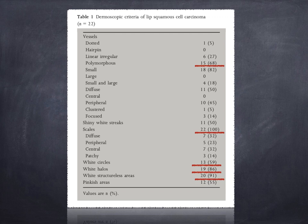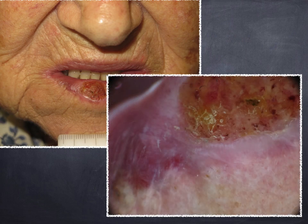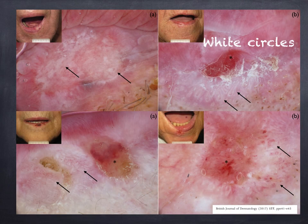Those three features were also seen usually in squamous cell carcinoma located on the skin. Here is one example of a huge flat ulcerated tumor on the lower lip, dermoscopically revealing the presence of polymorphic vessels. And here are other examples in which you see the presence of white color, white scales in case B, and dotted vessels along with shiny white streaks that are also quite often observed in squamous cell carcinoma on the lip.